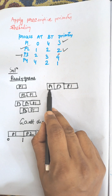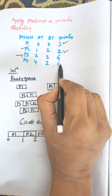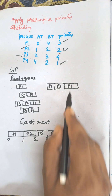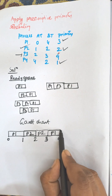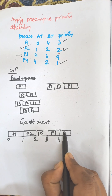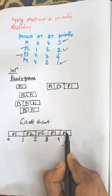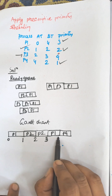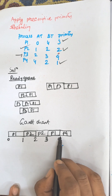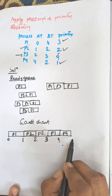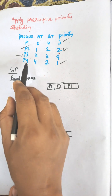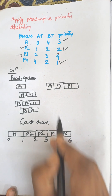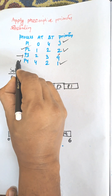Among P1, P3, and P4, the priority of P4 is better than P1 and P3. So P1 will be preempted and P4 will be executed. P4 will continue its execution up to time 6 and it finishes execution.